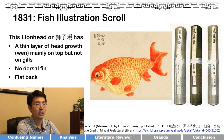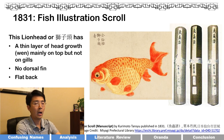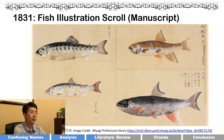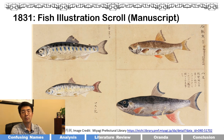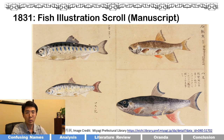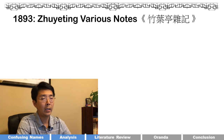To verify the accuracy of that 1831 illustration, let's look at other fish recorded in the same scroll. The next page is incredibly vivid — almost like a modern digital photo of fish taken out of water. Since those illustrations are so lifelike, we can trust that the lionhead picture from the same scroll is also an accurate record of how lionhead looked back in the 1830s.